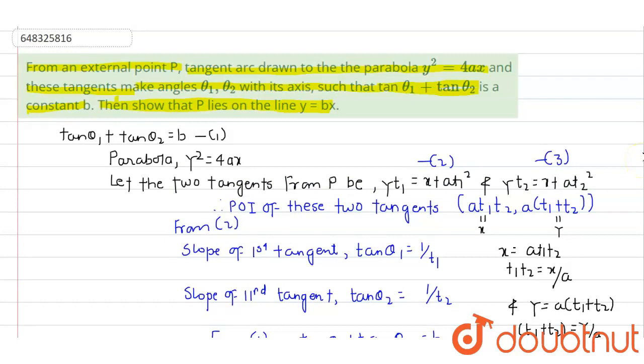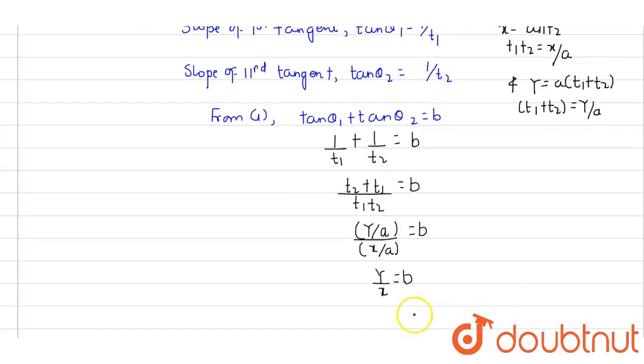And y and x are the coordinates of point P, the point of intersection of the tangents. So we got P lies on the line y = bx. This is how we solve this question. Thank you.